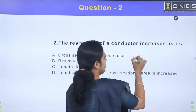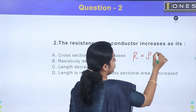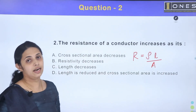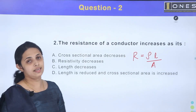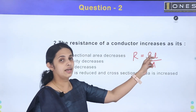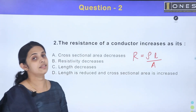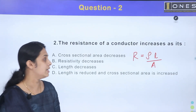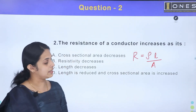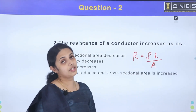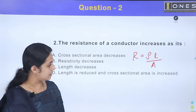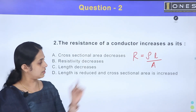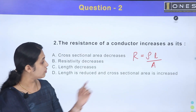Resistance R is equal to rho times L divided by A. Here rho is the resistivity of the material, L is the length of the conductor in meters, and A is the area of cross-section of the conductor in meter square.